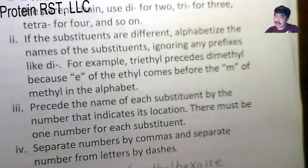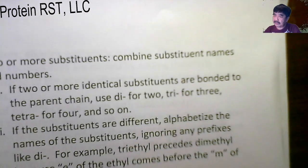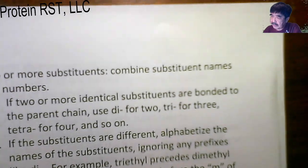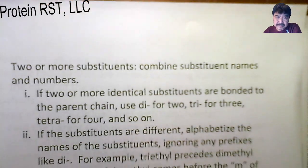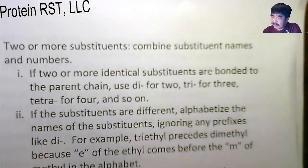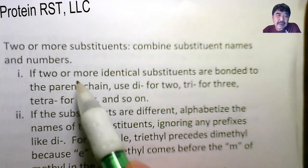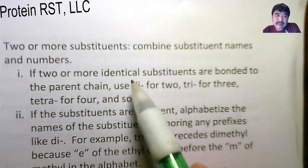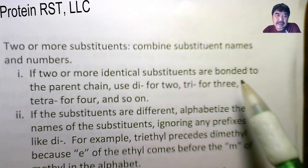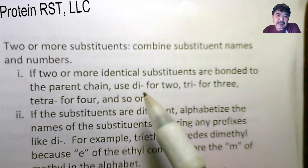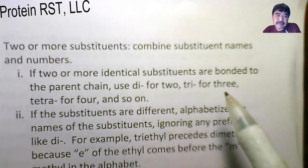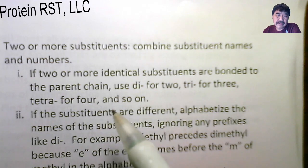Let's take a look at if we have two or more substituents. Then we combine substituent names and the numbers. First, if two or more identical substituents are bonded to the parent chain, use di- for two, tri- for three, tetra- for four, and so on.